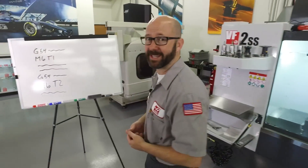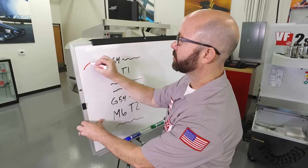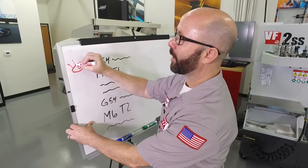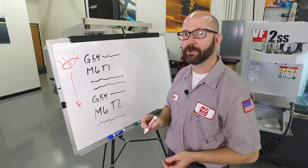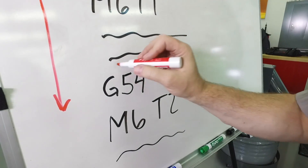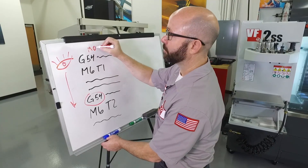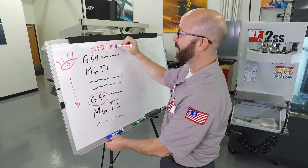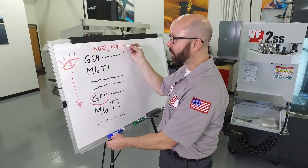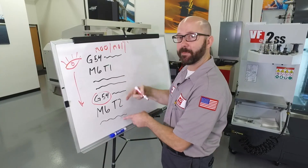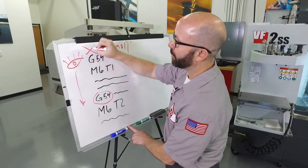Well, this isn't a machine problem — it's a program problem. The control uses look ahead and can see way ahead in my program. But there are certain codes that block look ahead, such as work offsets, an M00, an M01, or even a forward slash block delete. These all block look ahead, which are keeping my tool from being pre-staged. This is bad code.